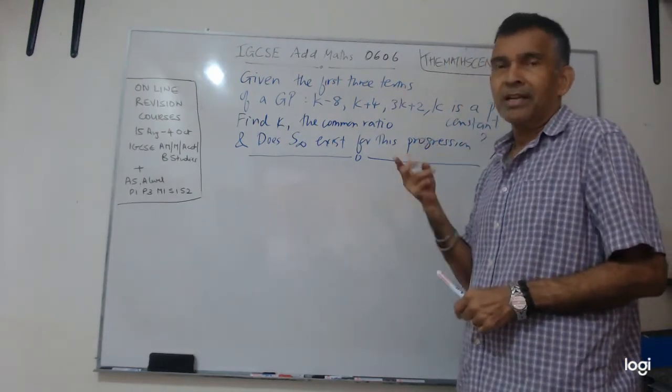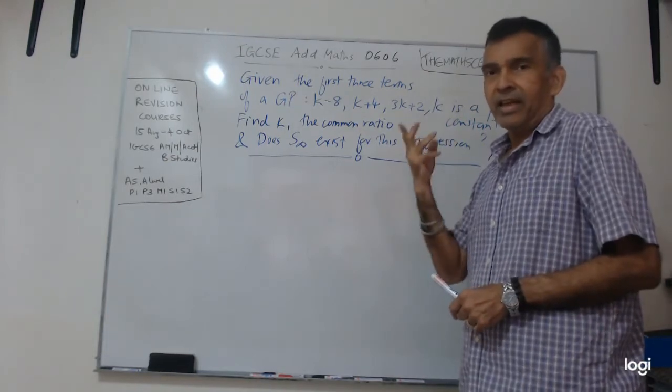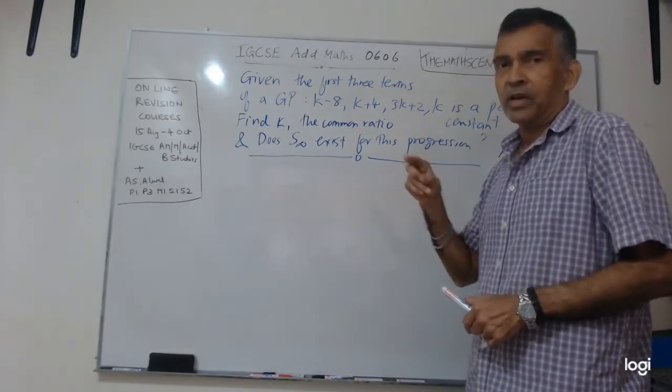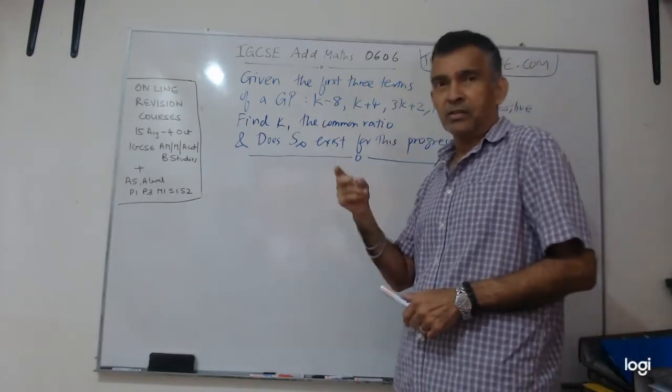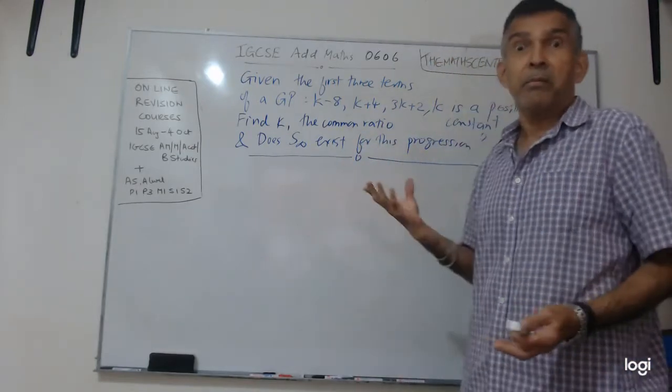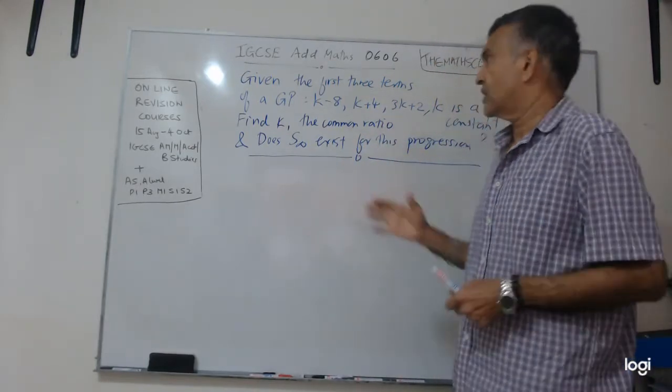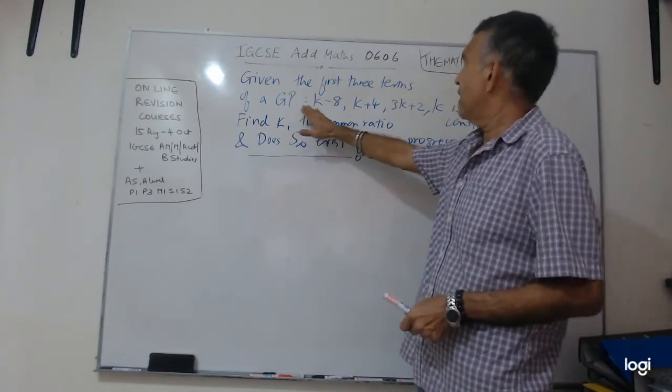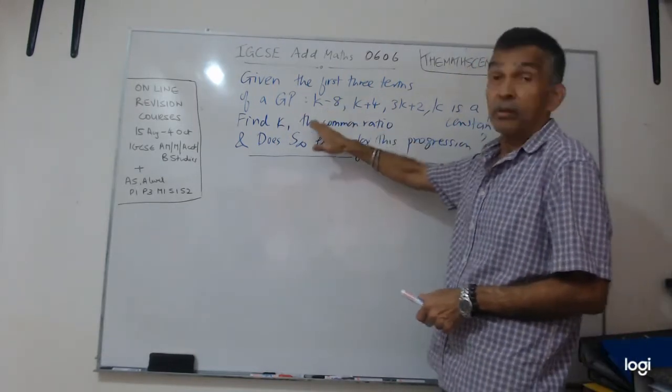The first three terms of a geometric progression. So the formulas must start hitting you: A, AR, A R squared, A R to the power of N minus 1, sum formulas. The formulas must come. So we have got three terms given to us of a GP, geometric progression.